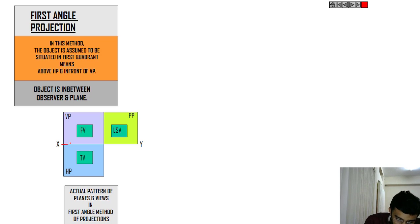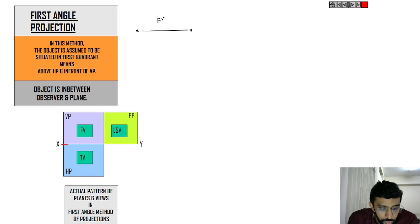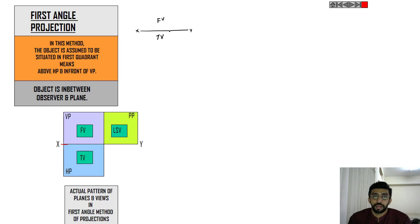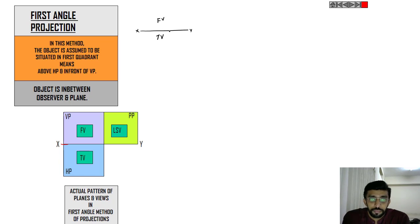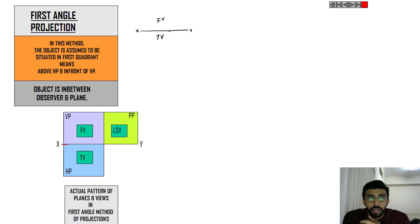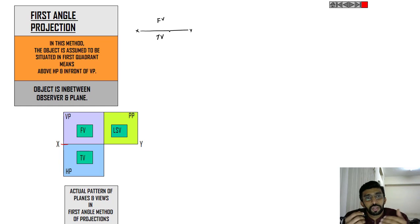If we have an XY line like this, for first angle projection we draw the front view above the reference line, the XY line, and the top view has to be represented below the reference line. If you find it difficult to visualize things, just follow the procedure. Common sense plus procedure is more than sufficient to learn engineering graphics. The front view is associated with VP and the top view is associated with HP.